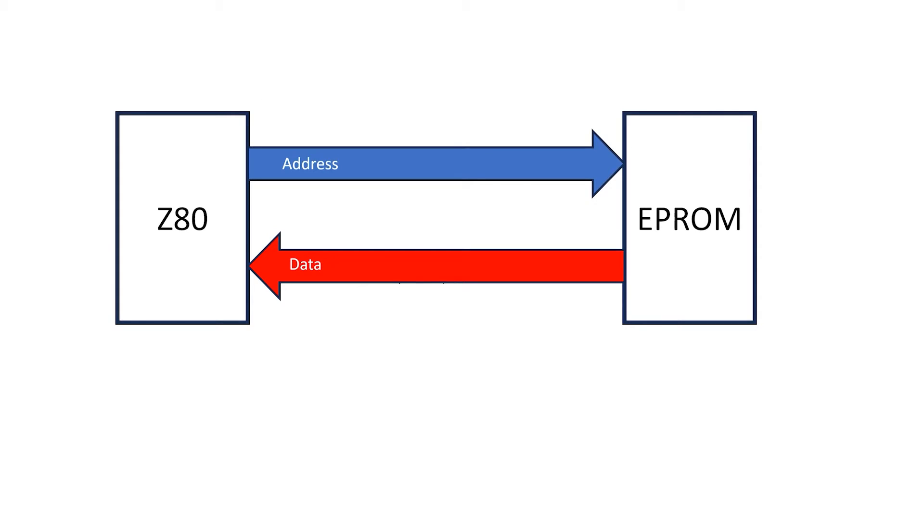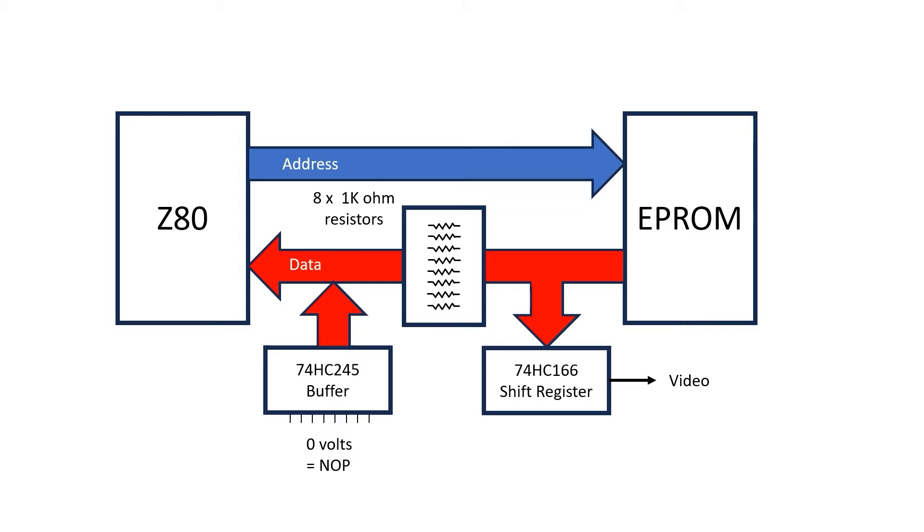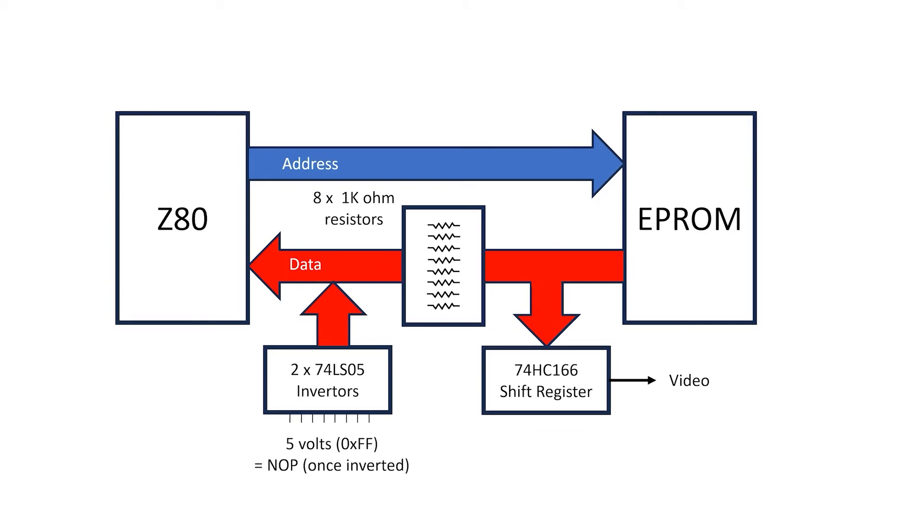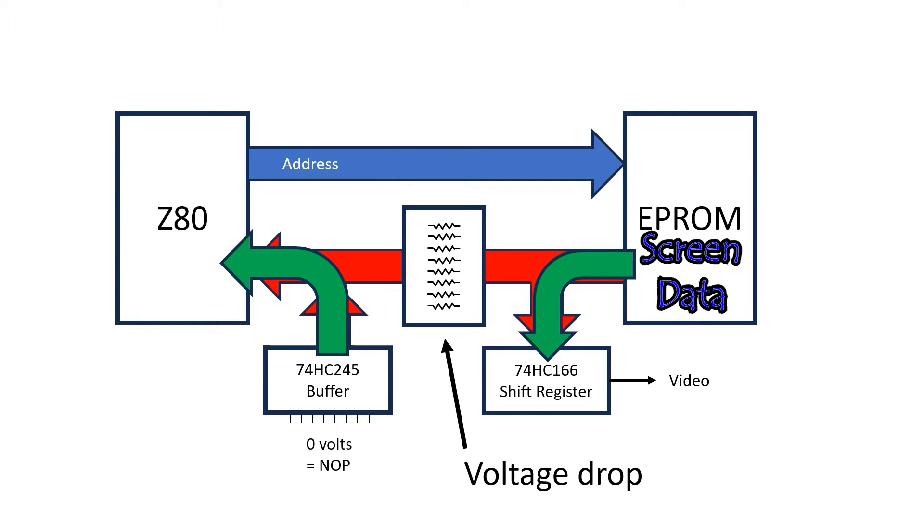Now, there are quite a few tricks used to achieve this, but the first trick was to make the Z80 see NOP instructions while screen data was being fetched from the memory. This is done by splitting the data bus with some resistors. While we're scanning video data from the memory, the NOP generator is active, and the Z80 sees NOP instructions and counts up.